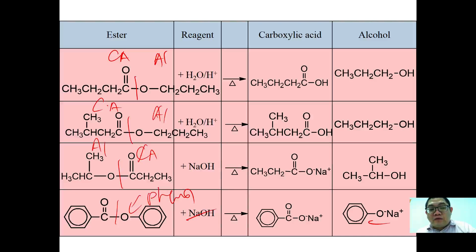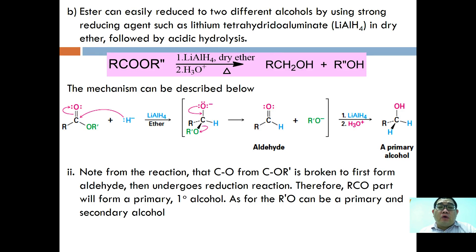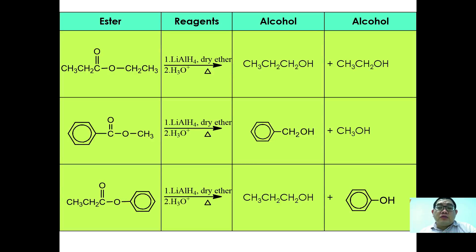Esters can be reduced to two different alcohols using a strong reducing agent. The C-O bond from the RCOO portion is first broken to form an aldehyde, which then undergoes further reduction to a primary alcohol. The OR portion also forms an alcohol — either primary or secondary depending on the substituents. Examples of these reduction equations are shown.